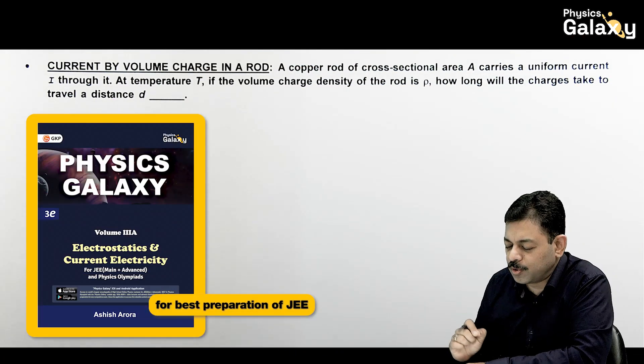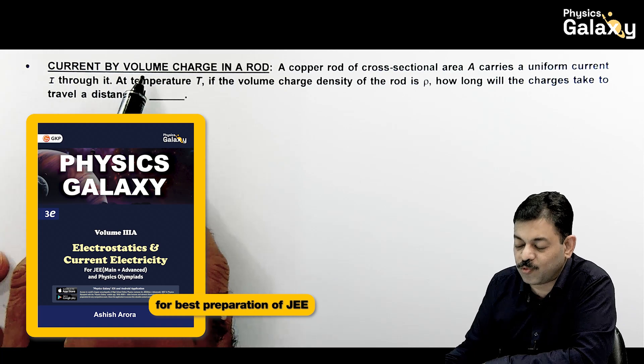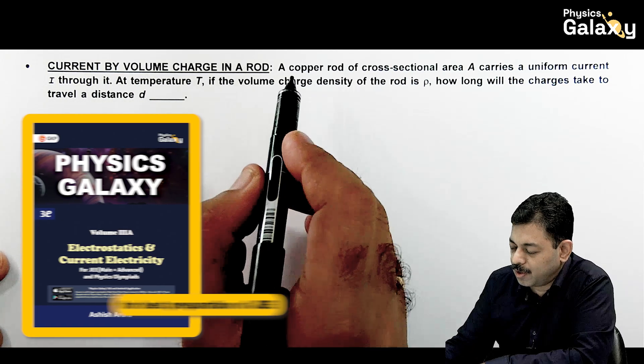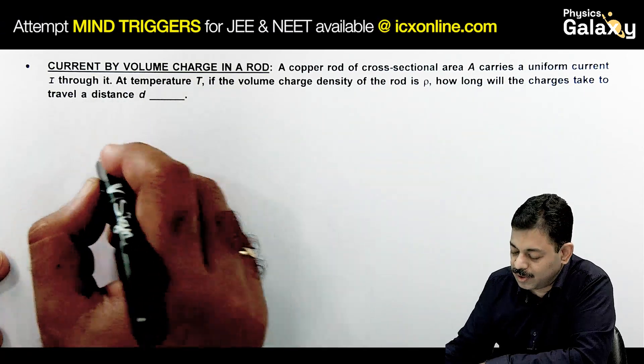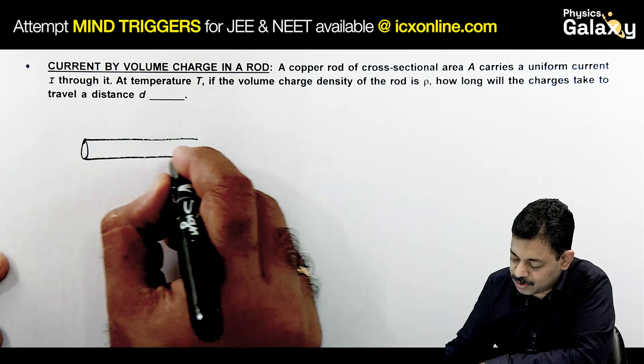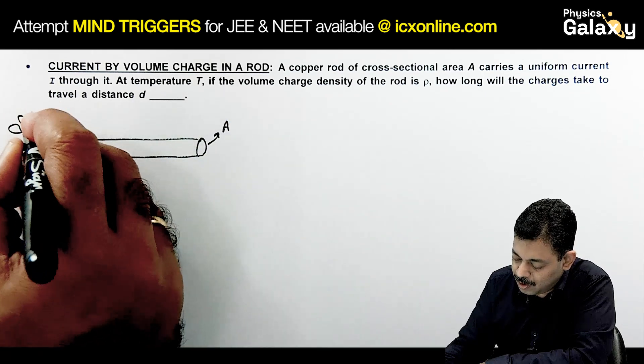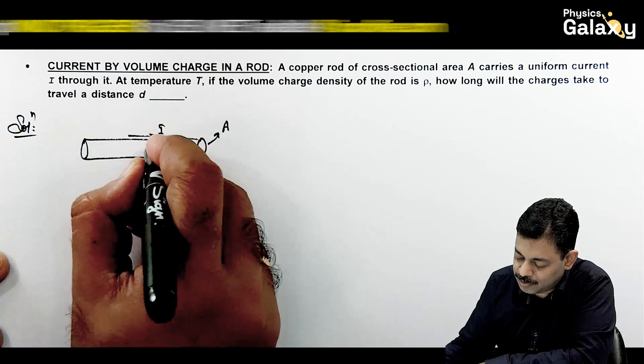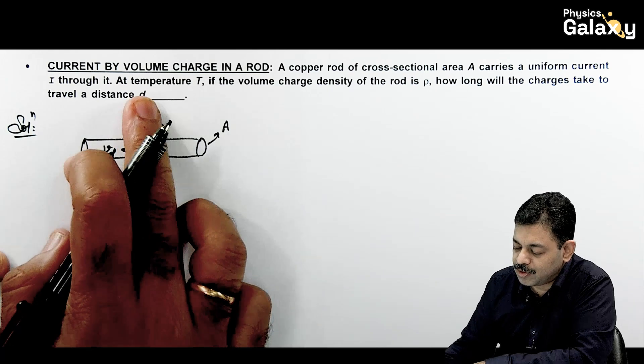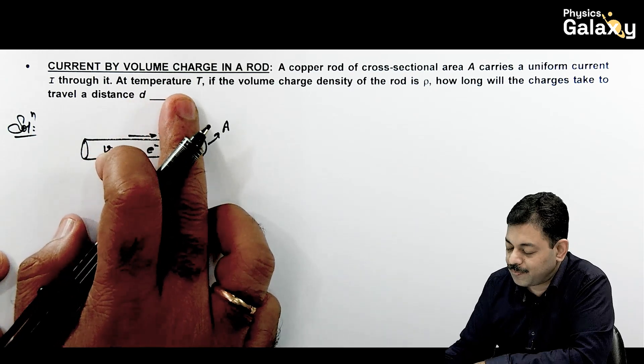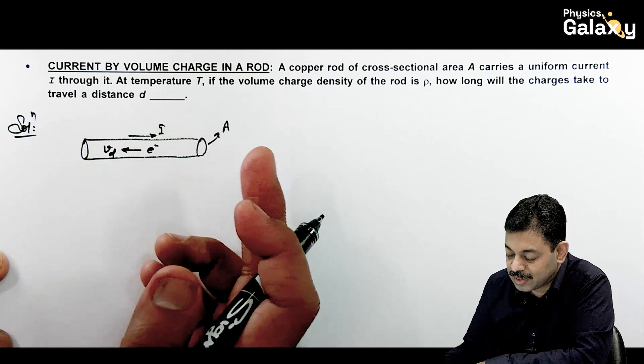Similar to the previous case, we will be discussing current by volume charge in a rod. It says a copper rod of cross sectional area A carries a uniform current I through it. A rod which has cross sectional area A is given. And in this situation current I flows in it, which is obviously due to the drift speed of electrons in opposite direction. Now in the situation it says at temperature T, if the volume charge density of rod is rho, how long will the charges take to travel a distance D.